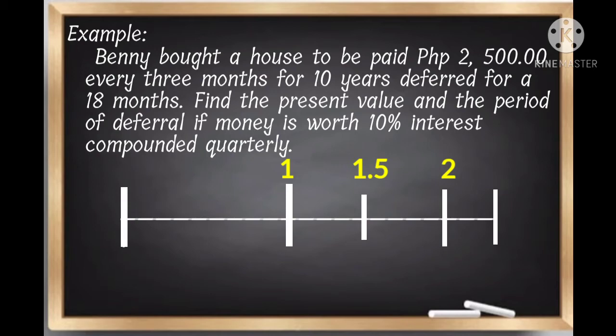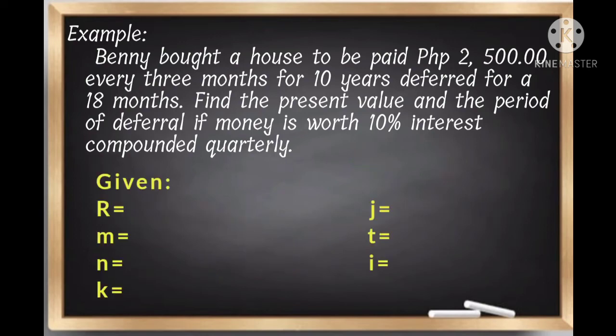It is compounded quarterly, which means every year is divided by 4. Now we count the period of deferral: 1, 2, 3, 4, 5, and 6. Therefore, our period of deferral is 6.